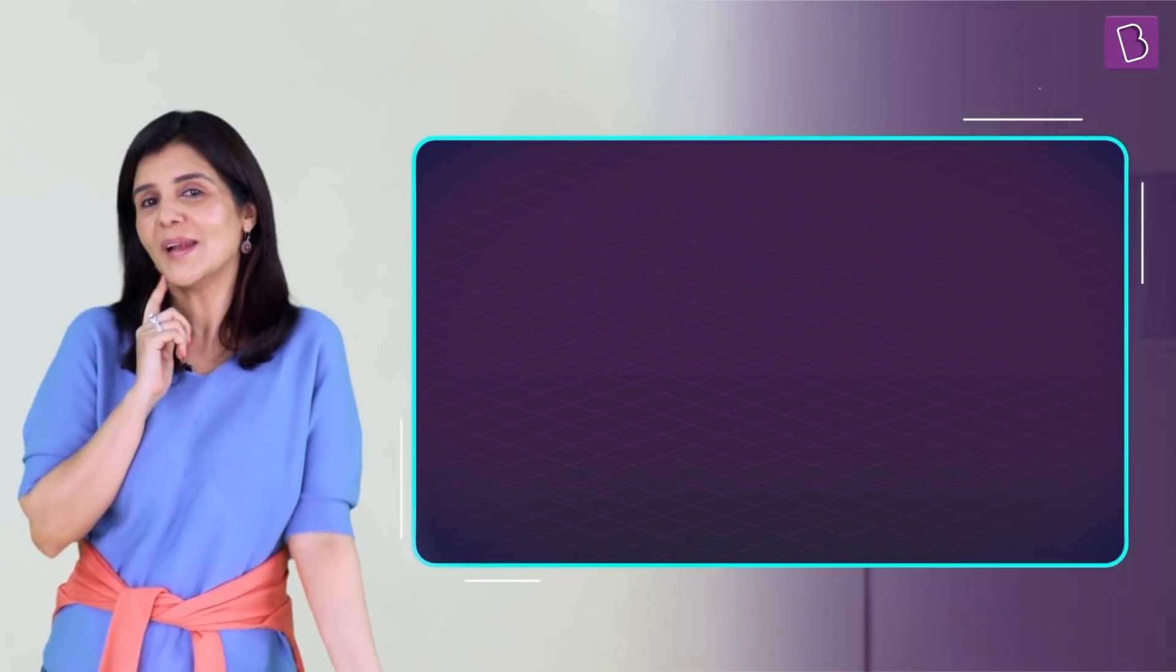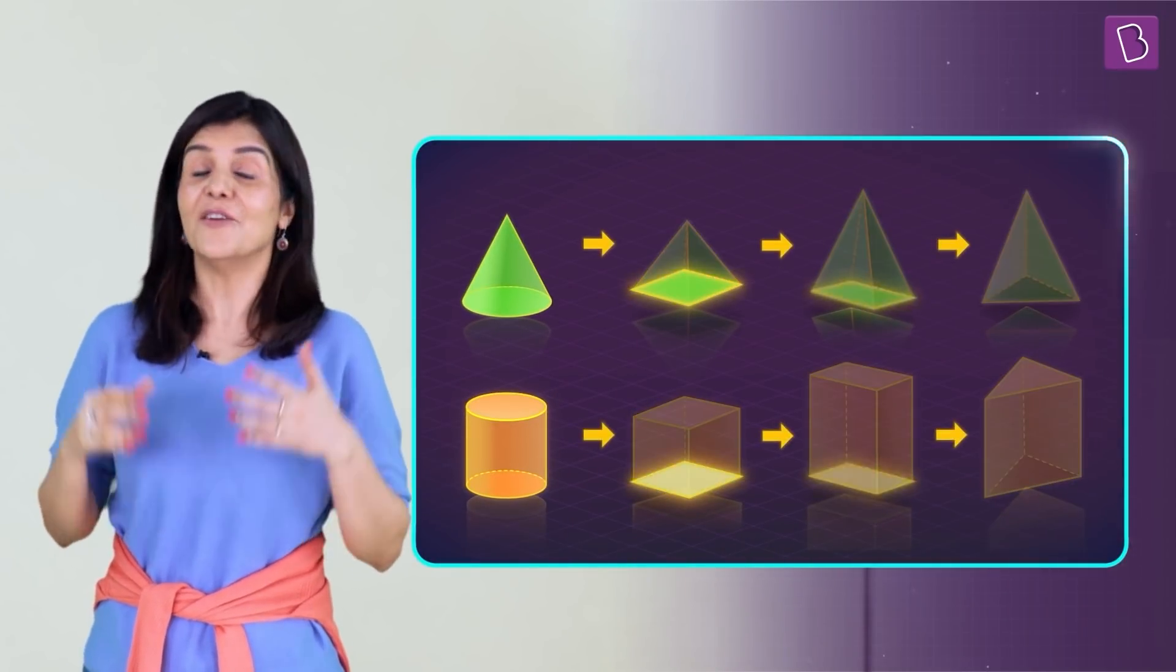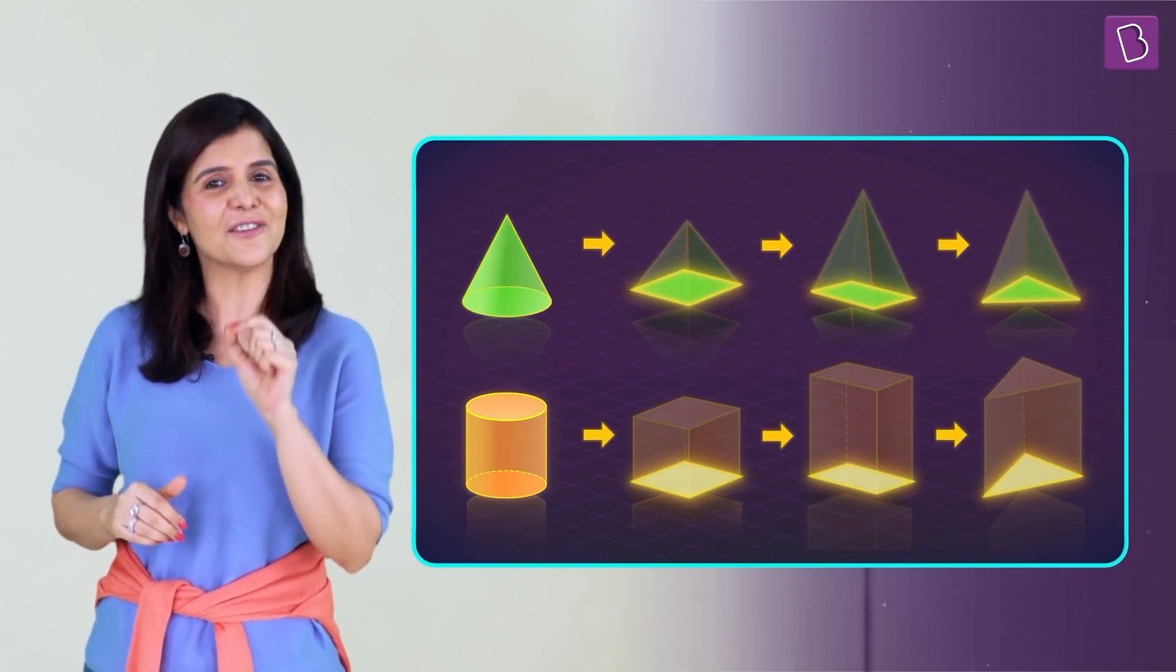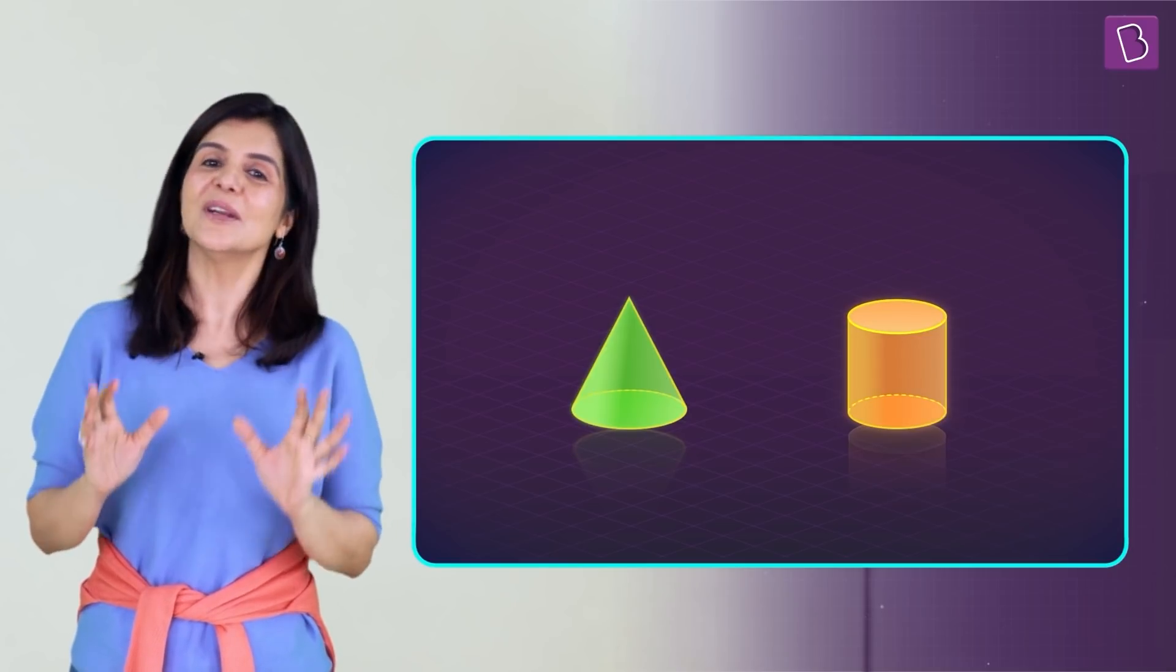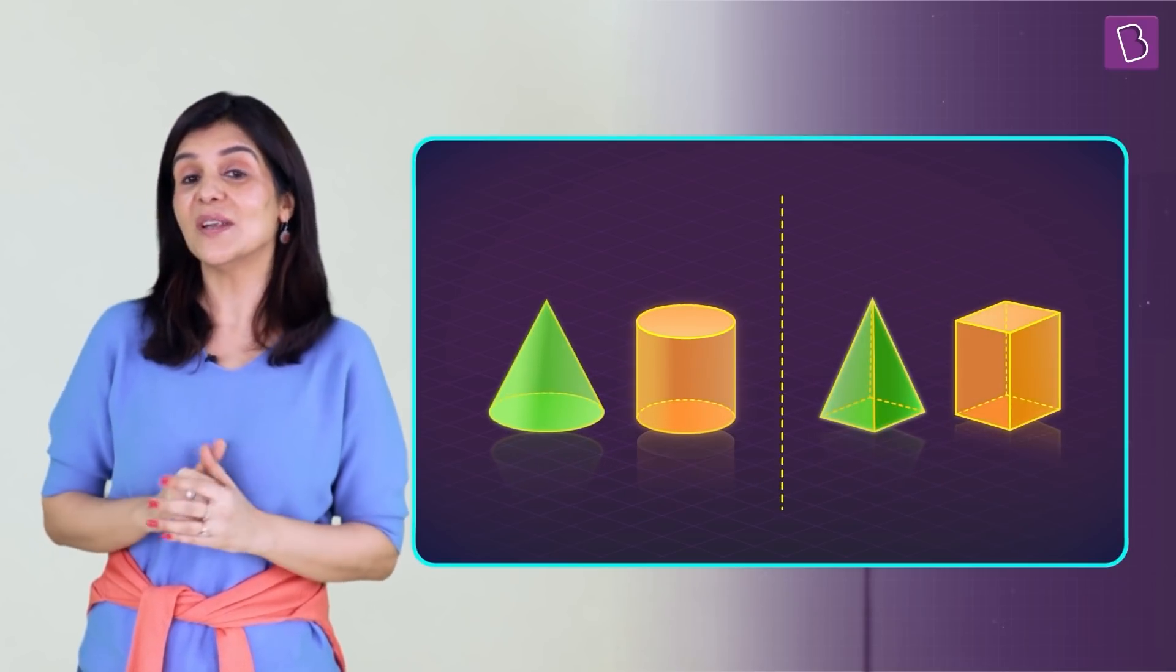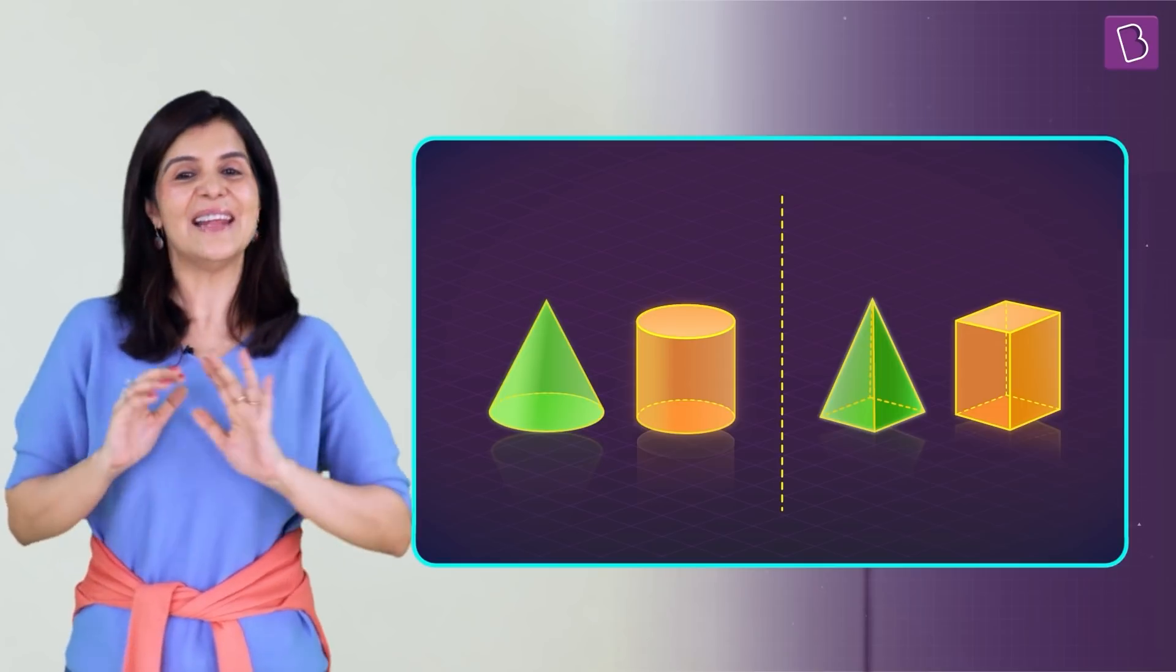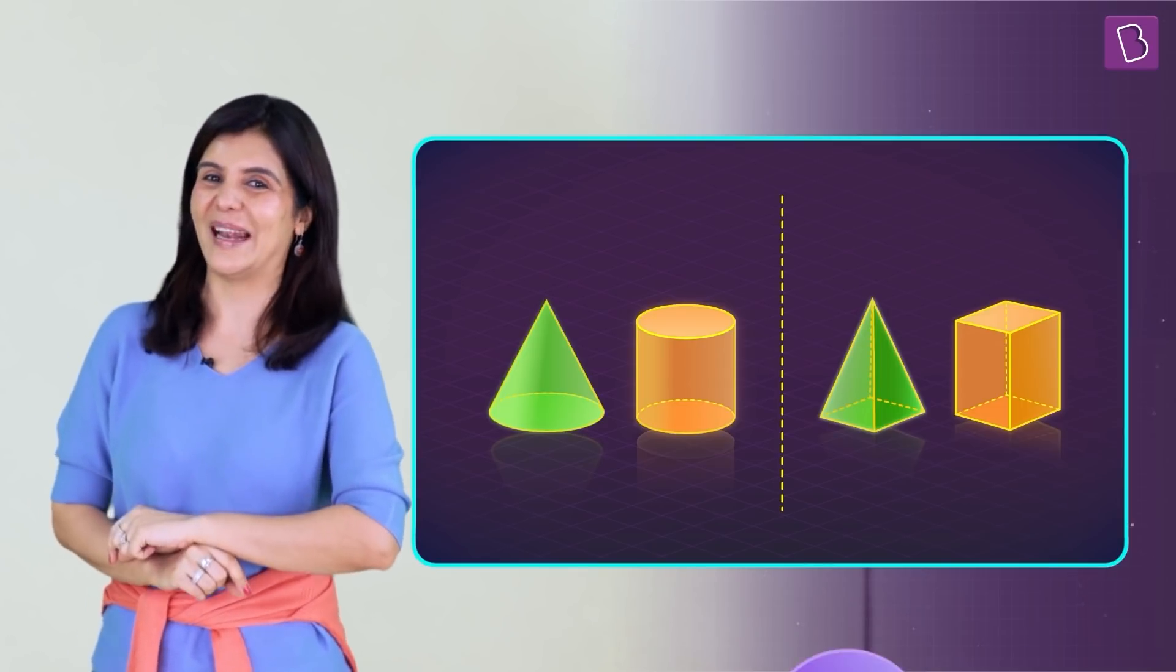I wonder what will happen if the cone and cylinder have square, rectangular or triangular bases. Will this relationship hold true even then? Now, let's see how would a cone and a cylinder with different bases look? Have you seen these somewhere? Let's try if the same volume relationship holds true for them as well.